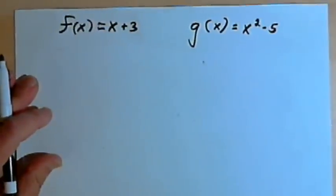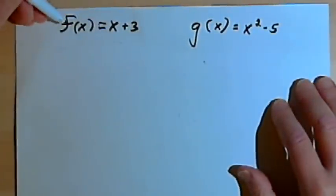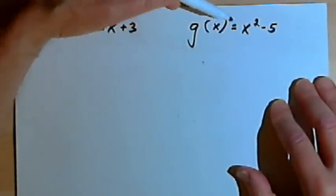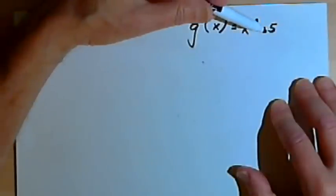So let's say you're given two functions. You've got function f, and this is f of x equals x plus 3, and function g, and that's g of x equals x squared minus 5.